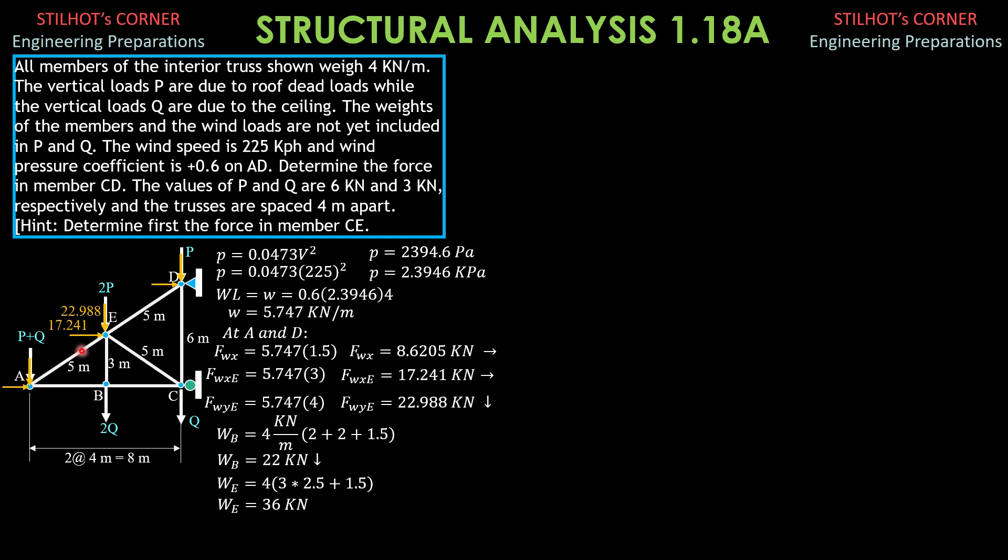Then the total horizontal load at E is 17 - weights at C, rather, we have 4 kN per meter times, we have half of BC 2, half of CE 2.5, then half of member CD 3. So W sub C is equal to 30 kN downward.